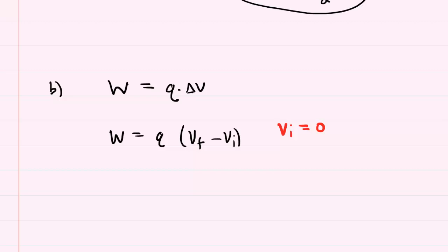it wouldn't feel the effects of the charges that were located at the center of the square, and therefore its electric potential initially would be 0. So this term basically drops out,